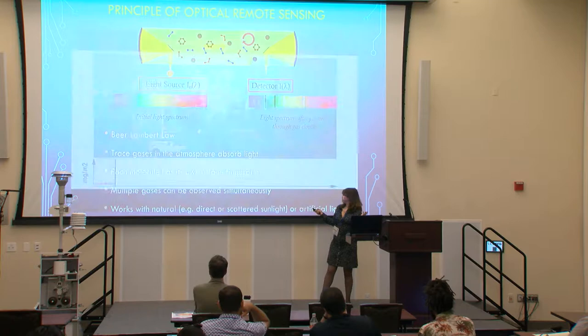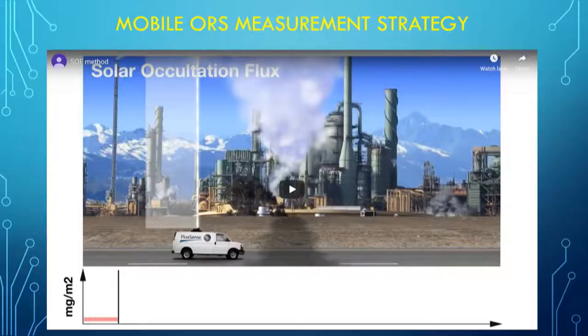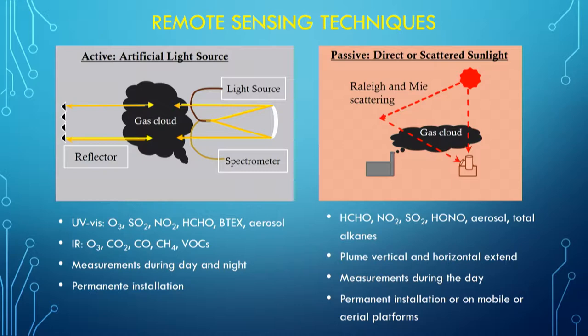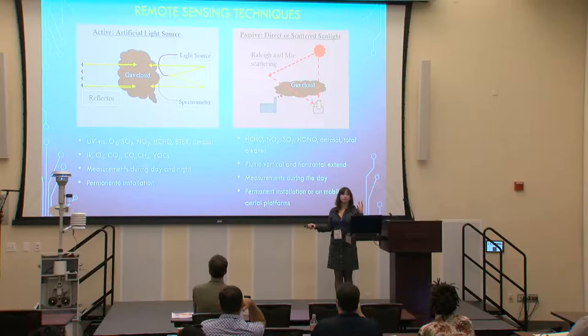A picture is worth a thousand words and I had a little movie — I'm going to try one more time. It didn't work prior to the start of this presentation. Alright, it doesn't work, so if you're interested in seeing the movie and other movies, contact me by email and I'll send you links to these visual presentations. This is more like a cartoon to explain the different fundamental types of remote sensing.